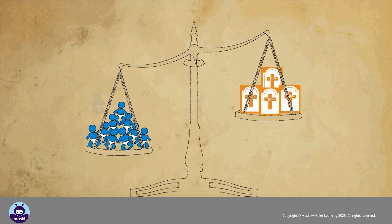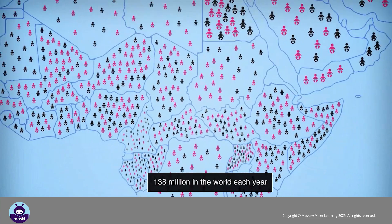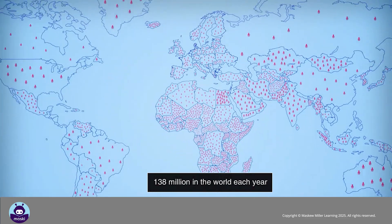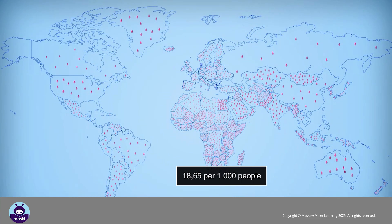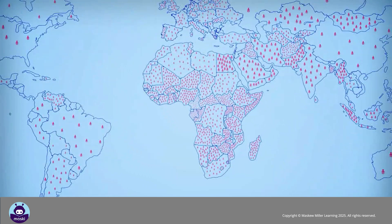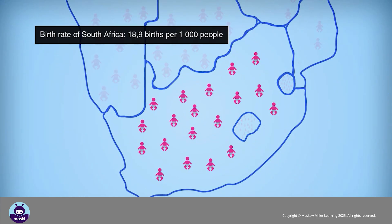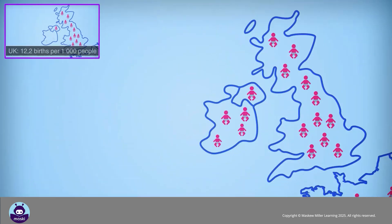The population keeps increasing because the number of people being born is greater than the number of people that die. The birth rate is the number of babies born each year, expressed as a number per 1,000 people. For example, in 2014 South Africa's birth rate was 18.9 births per 1,000 people. Countries that are more developed have lower birth rates.